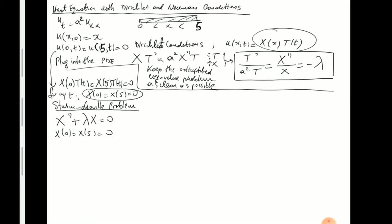I'm going to do fewer steps than before on this one. Check for yourself that the cases λ < 0 and λ = 0 lead to the zero solution, so those will be disregarded. It's very similar to the case on [0, π]. In two lectures ago, we had the same ODE with boundary conditions X(0) = X(π) = 0. The whole mechanics are the same.